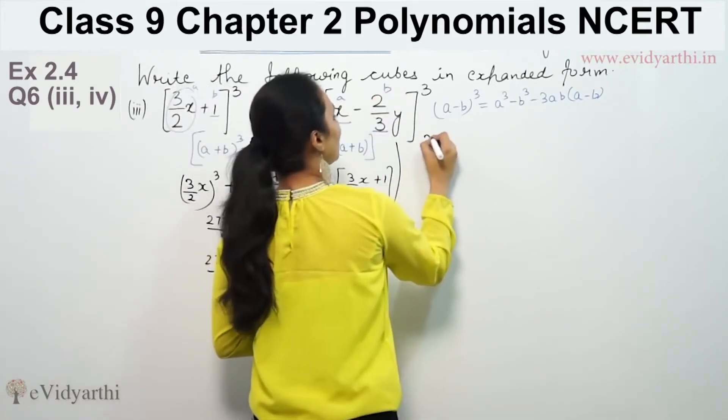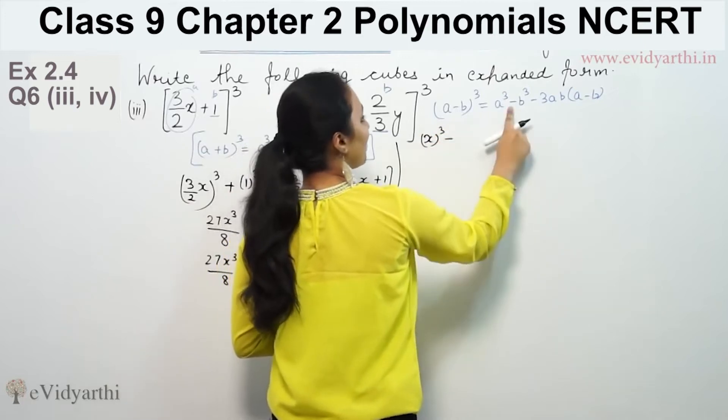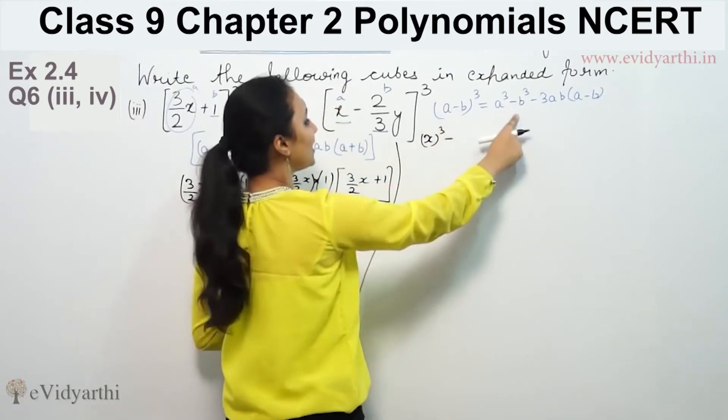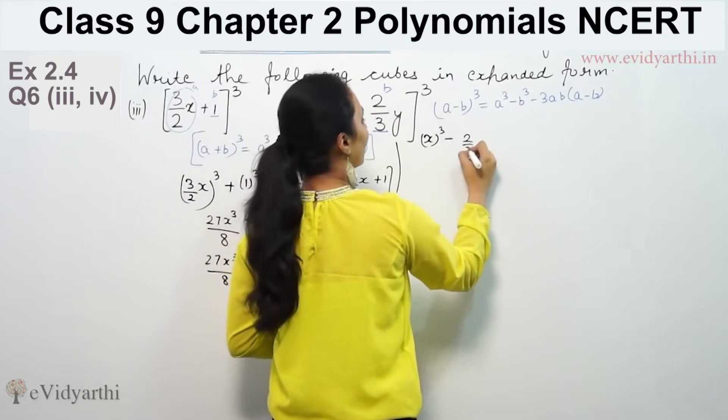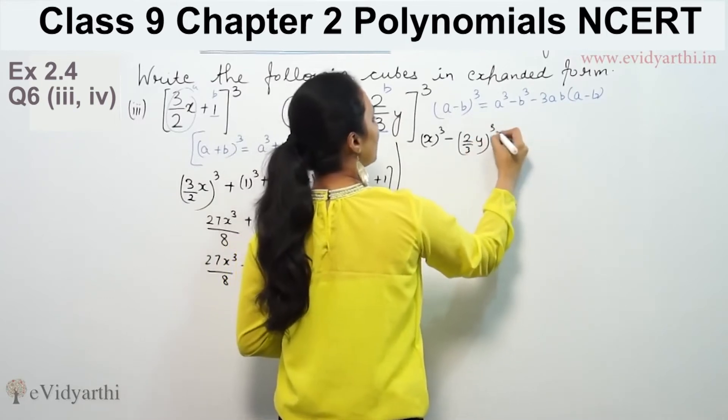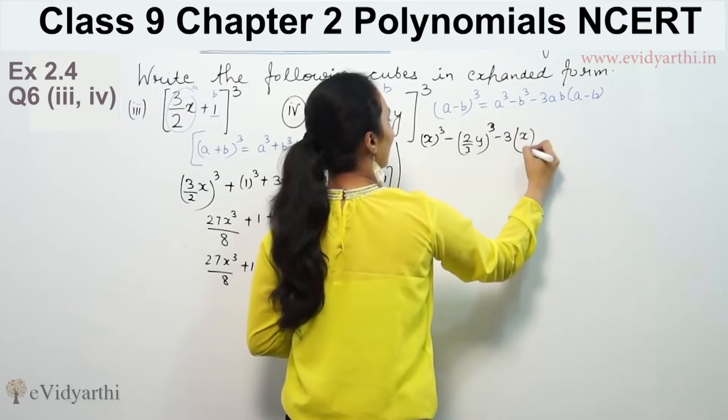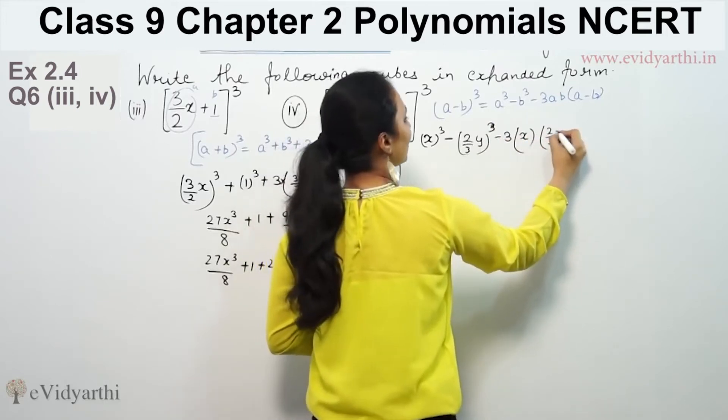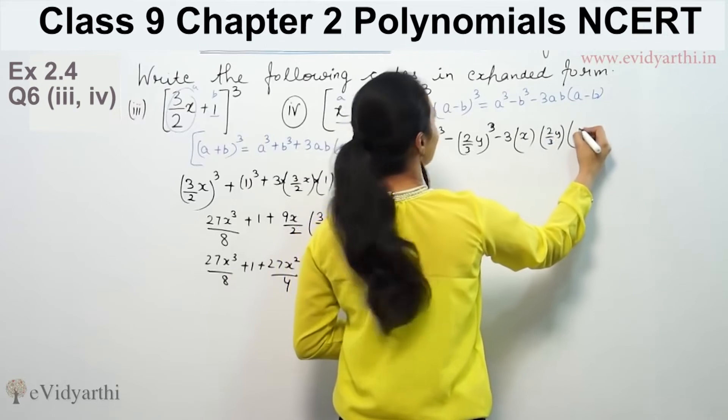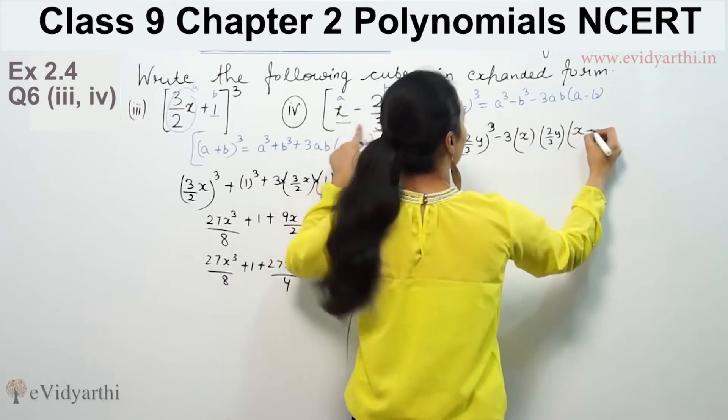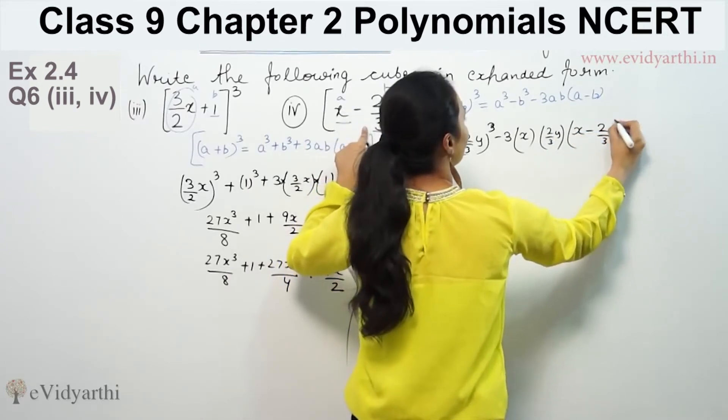A³ means x³, minus B³ which is (2/3y)³, minus 3 × A × B, which is 3 × x × (2/3y), in bracket (A - B), so x - 2/3y.